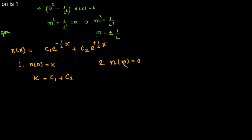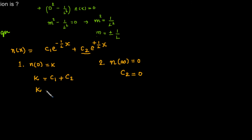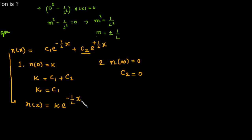The term c₂·e^(+x/l) goes to infinity as x → ∞. For n(∞) = 0, we require c₂ = 0. From the first boundary condition, k = c₁ + c₂ = c₁, so c₁ = k. Therefore, the final solution is n(x) = k·e^(−x/l).